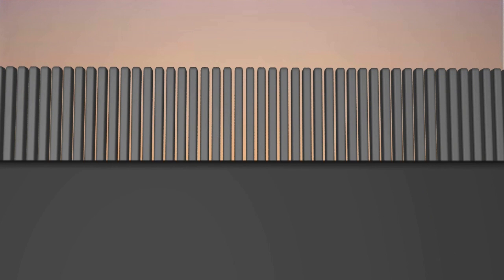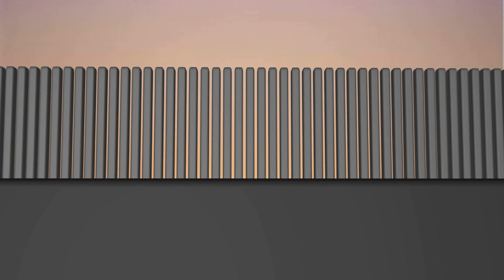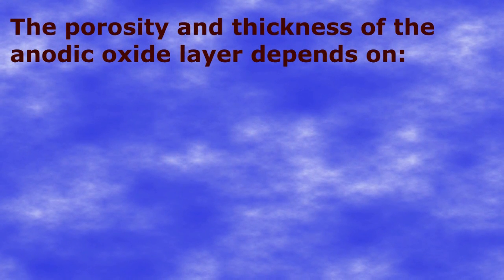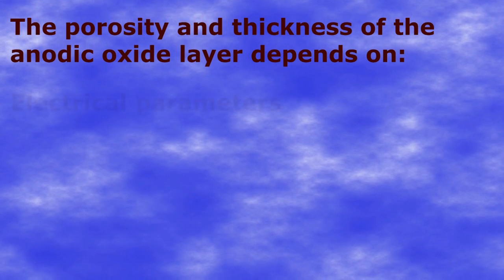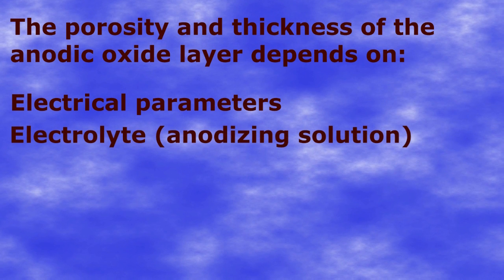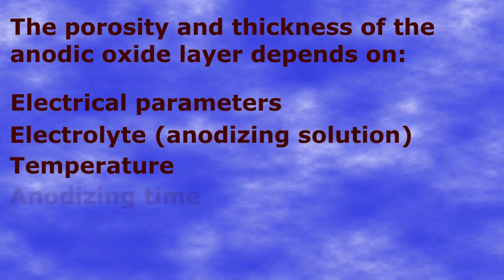As a result, a nanoporous oxide layer is generated at the cost of aluminum. The porosity and thickness of this oxide layer depends on the electrical parameters, type of electrolyte, its temperature, and anodizing time.